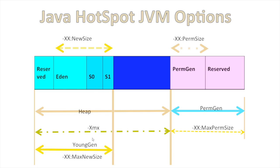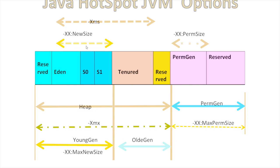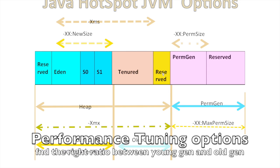The size of Eden can be set with -XX:NewSize. So out of all the young generation size, the max new size is configured, and within that, the new size is the Eden allocation. Then comes the old gen — the old generation space, which contains the Tenured block and the reserved block. From Eden to Tenured, you can give the option -Xms.